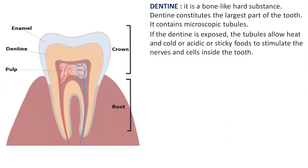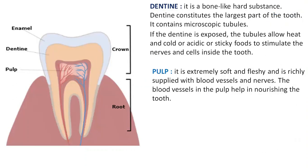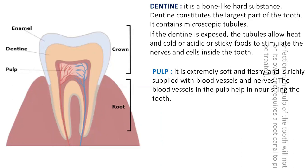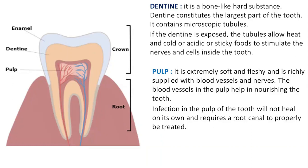Dentine also acts as a connecting bridge between the crown on top and the root line below it. Dentine has a hollow space filled with a soft material called the pulp, also known as dental pulp — the innermost layer of our tooth. It is extremely soft and fleshy and is richly supplied with blood vessels and nerves. The blood vessels in the pulp help in nourishing the tooth. If there is any infection in the pulp, it will not heal on its own and requires a root canal to be properly treated. Whenever we feel pain in our tooth, it is the pulp region that sends us a signal.